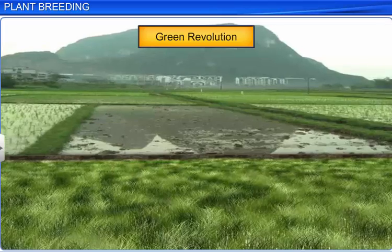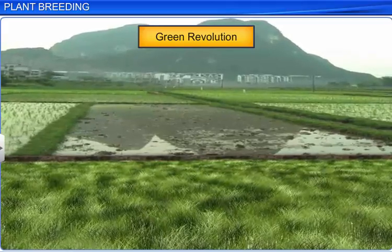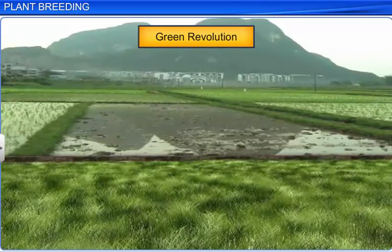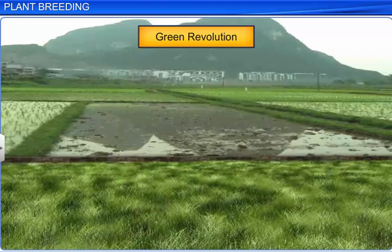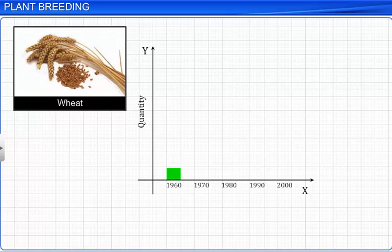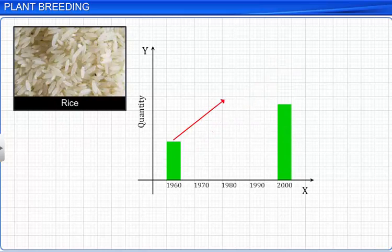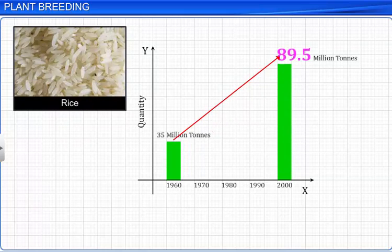The Green Revolution is a result of using various plant breeding techniques to boost agriculture. During this period, there was a dramatic increase in the production of wheat from 11 to 75 million tons, and rice from 35 to 89.5 million tons.